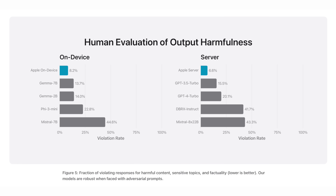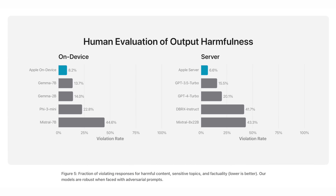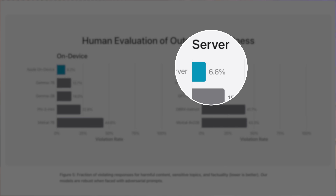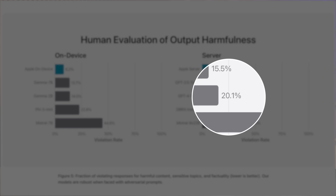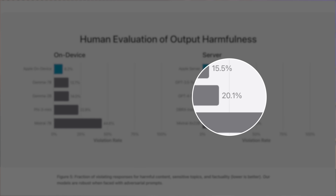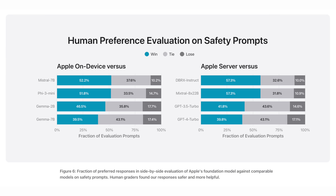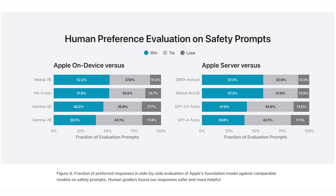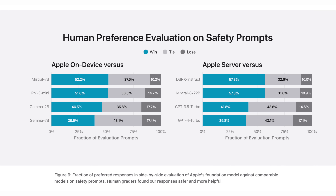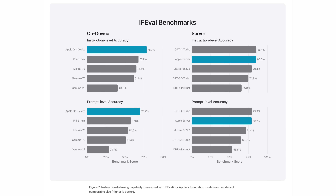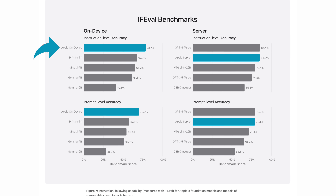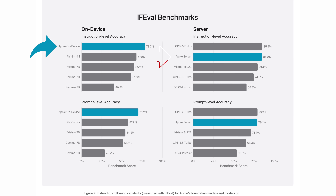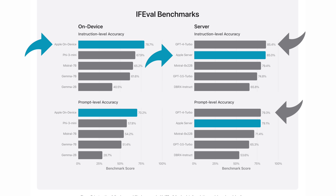Apple even evaluated output harmfulness, having by far the lowest violation rate of 6.6% on the Apple server, compared to 20.1% on GPT-4 Turbo. In terms of safety prompts, Apple matched or beat all of these other models 82.3–90% of the time. Apple's on-device accuracy of instructions and prompts beat everything else by far, while the server was just behind GPT-4 Turbo. So once again, Apple Intelligence uses Apple's own custom models — not OpenAI's GPT models.